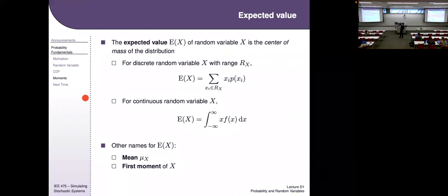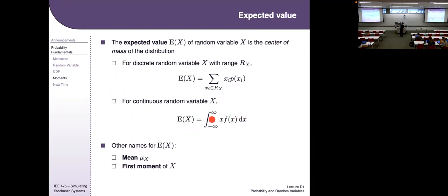The last thing to define is moments. The expected value: for a discrete random variable, take all outcomes in the range, multiply each by its probability, and sum them up. For a continuous random variable, take all outcomes from negative infinity to infinity, multiply by their density, and take the area under that curve. This is the formal definition of expected value. Where does this come from? It is the center of mass of the distribution.